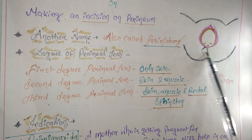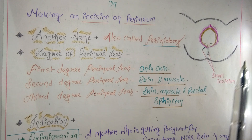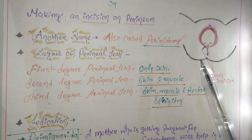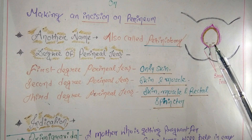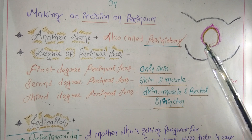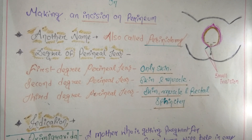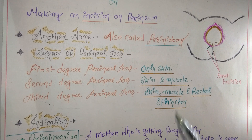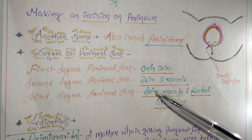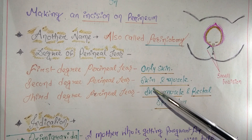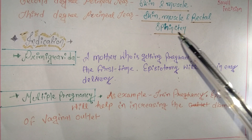Episiotomy minimizes the risk of rupture, bleeding, and injury. If we don't perform this procedure, it can lead to a third-degree perineal tear, which is very dangerous and can cause severe bleeding, send the mother into shock, and can even be fatal. So to avoid second- and third-degree tears we perform episiotomy, which only involves the skin.